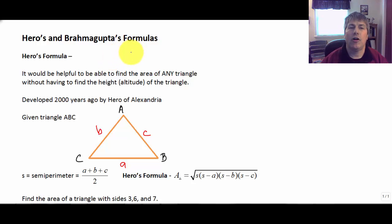The first formula is called Hero's Formula. Wouldn't it be helpful to find the area of any triangle without having to find the height or the altitude of the triangle? I know we know how to do that with an equilateral triangle but not every triangle is equilateral. Well this formula developed 2000 years ago by Hero of Alexandria is called Hero's Formula. And given any triangle ABC with sides A, B, and C.